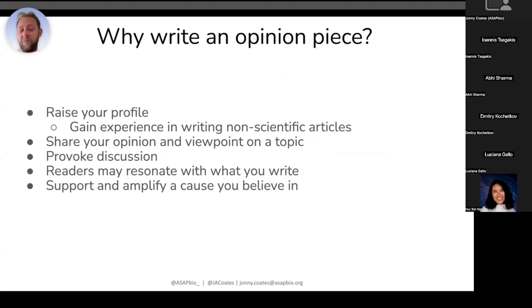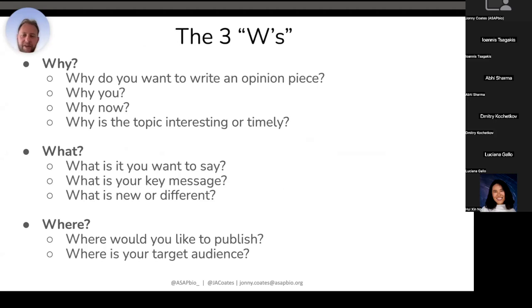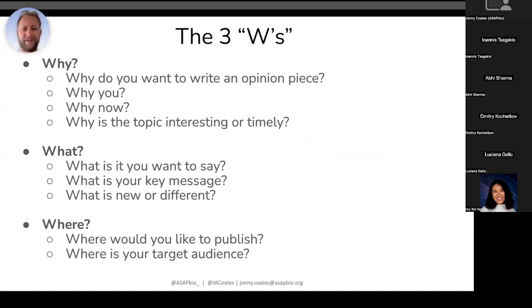So make it preprint related. If you support preprints, it's great to write opinion pieces about why you support them and what the benefits are. I've broken down writing a piece into what I'm calling the three W's — Why, What, and Where. This is all based on my experience, distilled from reading an awful lot about how to write an opinion piece. The important thing is some of these questions within those broader themes do overlap, and that's very deliberate.